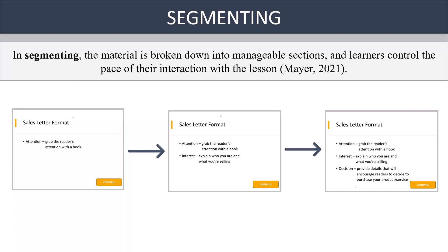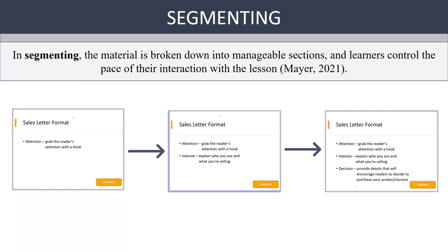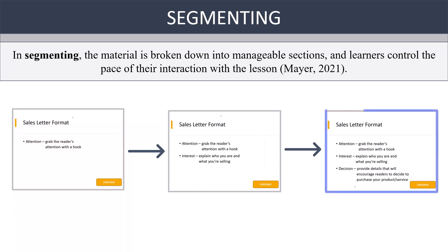You can see this in the images here. The image on the left shows the first aspect of sales letter format. The learner clicks the continue button when they're ready, and the second aspect is revealed in the middle image. This process continues until all aspects of the sales letter format are revealed at the learner's own pace.